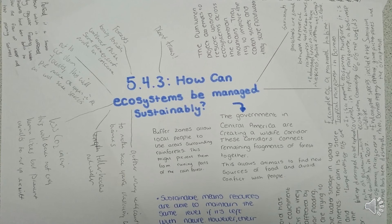5.4.3 looks at ecosystem management. You need to have a sustainable strategy to manage the habitat, biodiversity, tropical rainforest and one contrasting ecosystem. For example, agroforestry in the tropical rainforest is one approach. You could also have national parks in the tropical rainforest as well.